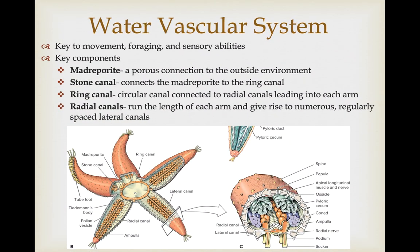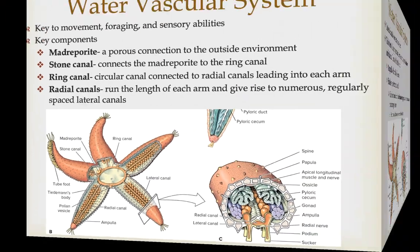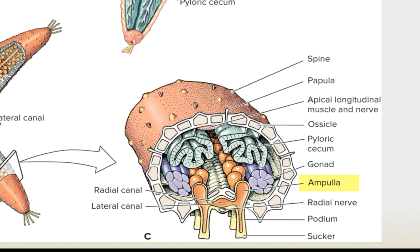The water vascular system is really the most impressive thing about echinoderms — it's key to their movement, sensory abilities, and foraging. The connection to the outside environment is a porous structure called the madreporite. It connects to a stone canal, which connects to the ring canal that goes around the center of the body. Radiating from the ring canal are radial canals that run the length of each arm, giving rise to lateral canals, which connect to the tube feet. The tube foot is a muscular tube protruding from a gap in the endoskeleton called the ambulacra, consisting of the ampulla and a terminal sucker.